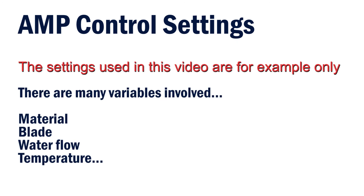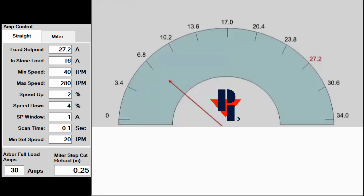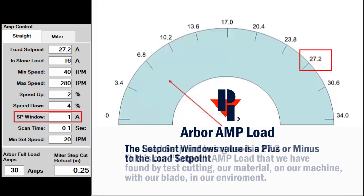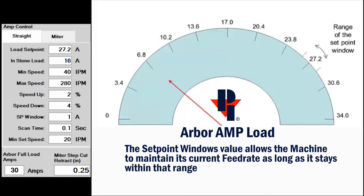Note that the settings used in this video are for example only. There are many variables specific to the equipment and the material. We will use a speedometer as an amp gauge to show how the settings affect the feed rate. We've set the value of the load setpoint at 27.2. With the setpoint window set to 1 Amp, our range is 1 Amp below and 1 Amp above our load setpoint. The machine will adjust its cutting feed rate to keep the Amp load within the range of the setpoint window.